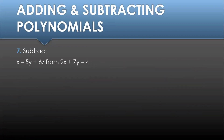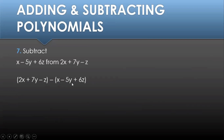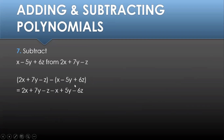Example 7: we have to subtract x minus 5y plus 6z from 2x plus 7y minus z. That gives us 2x plus 7y minus z minus the quantity x minus 5y plus 6z. It is important to always put parentheses on the subtrahend, because in subtraction we have to change the sign of each term: positive x becomes negative x, negative 5y becomes positive 5y, and positive 6z becomes negative 6z.